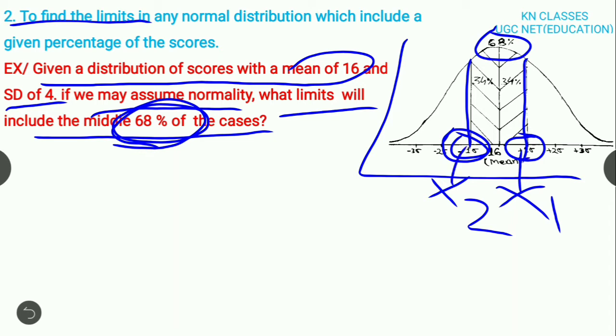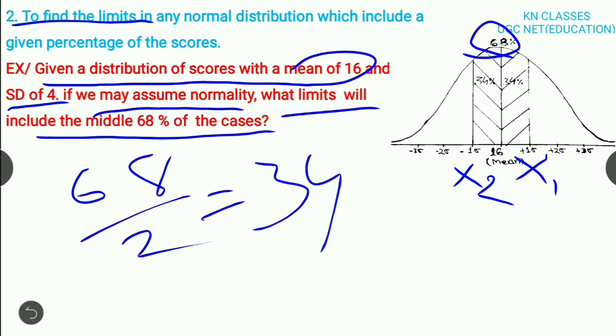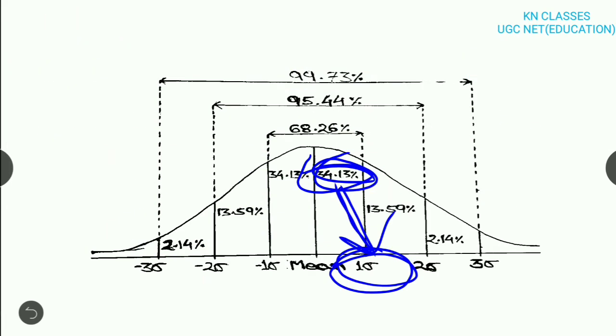We need to find out the middle 68% of the cases. We need to divide it into two parts. 68 divided by 2 is 34. 34 means on the negative side, 34, and on the plus side, 34. So here we have to find out X1 and X2.